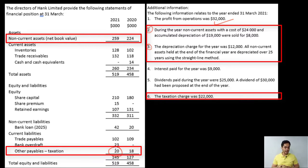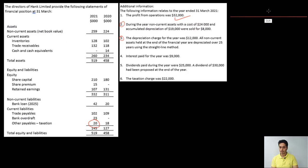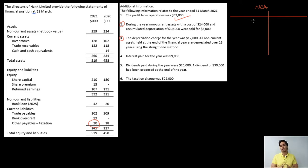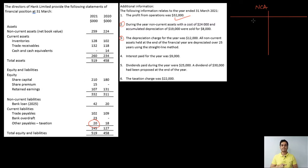Let me draw the T-accounts. For the non-current asset account, I'll put the balance brought down and balance carried down. Since non-current assets are stated at net book value in the balance sheet, I'll prepare this T-account at net book value — not at cost as usual. I'll put the depreciation charge for the year and the net book value of the asset disposed of on the credit side. Once all entries are in, the credit side is greater than the debit side, and the difference will be the purchase of new non-current assets — needed for investing activities.